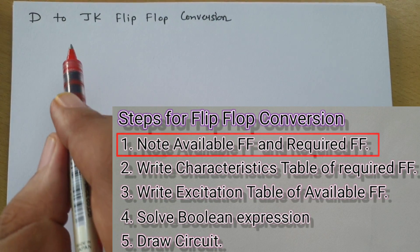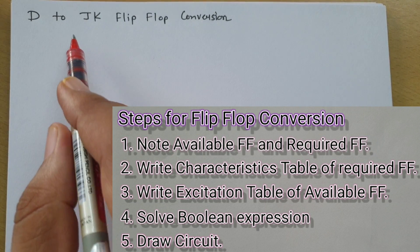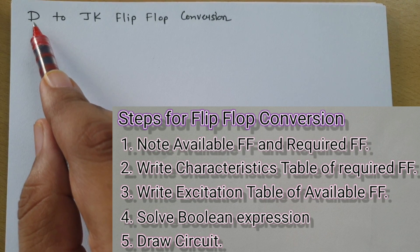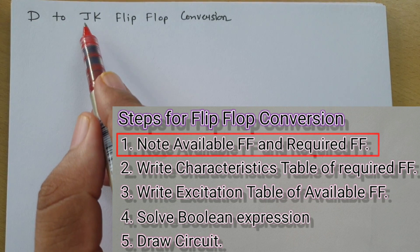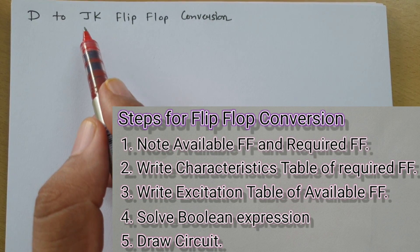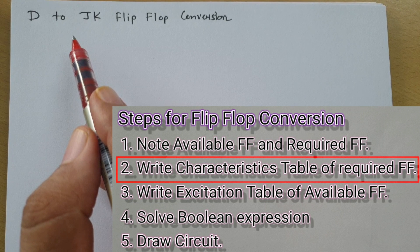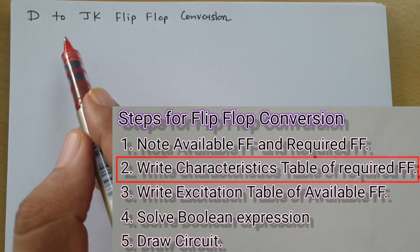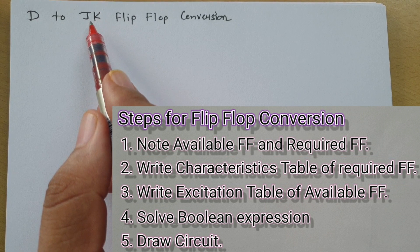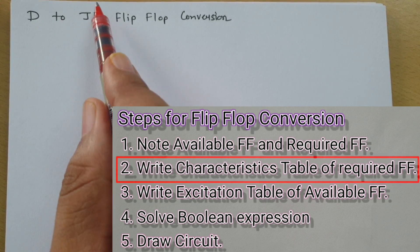In the first step, we need to note the available flip-flop and the required flip-flop. Here the available flip-flop is D flip-flop and the required flip-flop is JK flip-flop. In the second step, we need to write the characteristic table for the required flip-flop, which is the JK flip-flop.